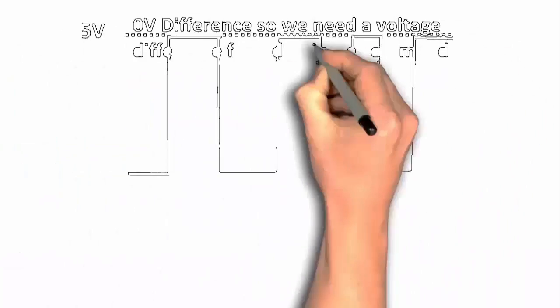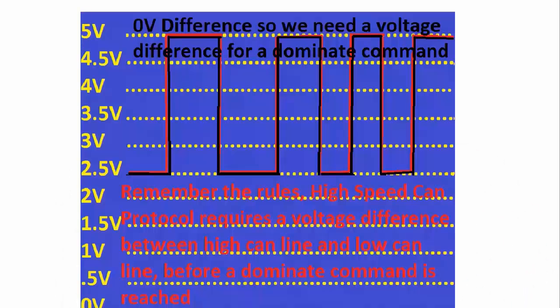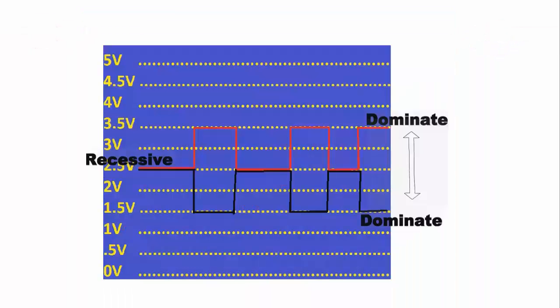Now, let's imagine we use equal voltage for both lines to move to a dominant command. Let's say 5 volts. So, both lines go to 5 volts. What is the difference on the voltage line? The answer is zero. But if we differ the voltage as it is in the case of CAN, we see the high CAN pull to 3.5 volts and the low CAN line pulls to 1.5 volts. Now we have a 2 volt difference.